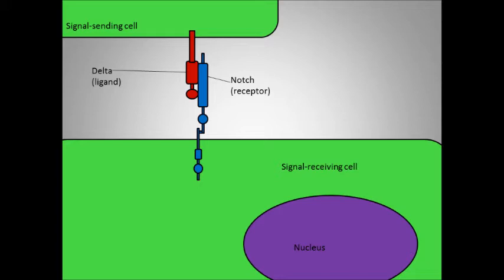When Delta binds to Notch, it allows for the cleavage of a fragment of the Notch protein called NICD, or Notch's intracellular domain. The NICD migrates through the cytoplasm and gets transported into the nucleus.